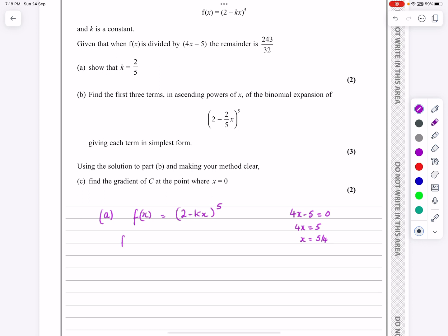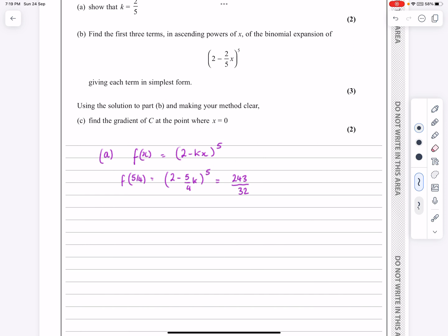So if I do f of 5/4, which in other words is 2 minus k, or (2 minus 5/4)k to the power of 5, when I do that I get the answer 243 all over 32. Just tidy this up by getting rid of some of these bits. Don't really need that bit there now. So I've just got to solve this.